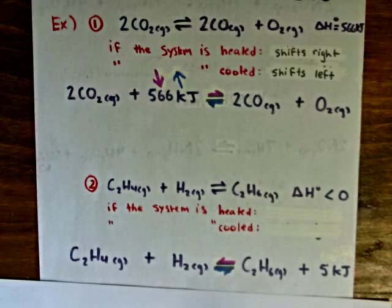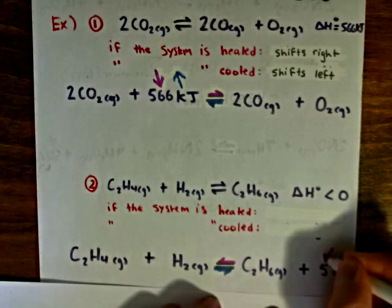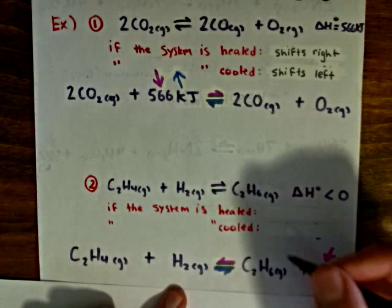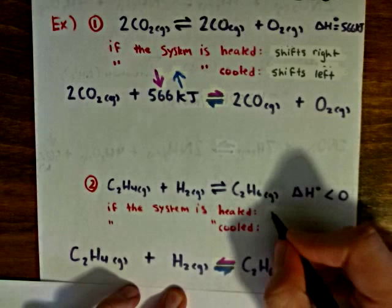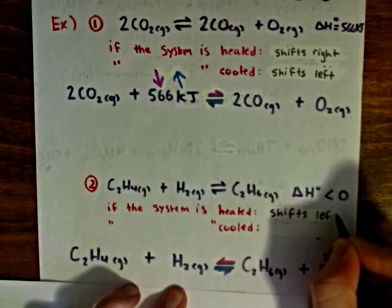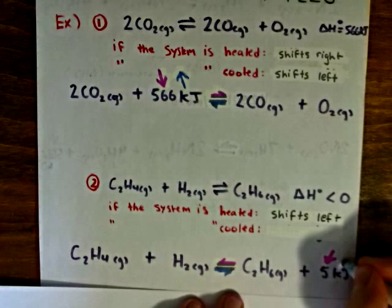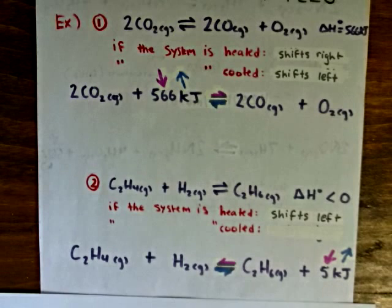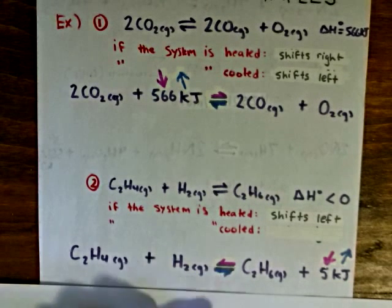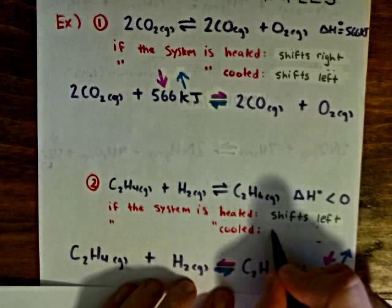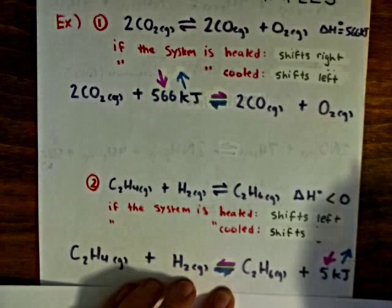If the system is heated, draw a red arrow into the energy term, then refer back to our equilibrium arrows. The red equilibrium arrow is pointing to the left, so if this equilibrium is heated, the equilibrium will shift to the left. But if this equilibrium is cooled, draw a blue arrow out of the energy term. Referring back to the equilibrium arrows, the blue equilibrium arrow is pointing to the right, so the equilibrium will shift to the right if cooled.